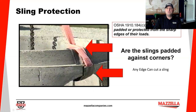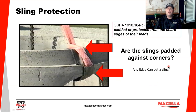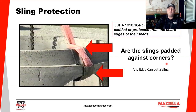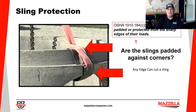OSHA 1910.184 states slings shall be padded or protected from the sharp edges of their loads. This piece of precast — to the hand — is probably not very sharp, but it can definitely cut a web sling. I would correct OSHA here and say any edge can cut a sling, whether it's a sharp load or an abrasive type where you get a sawing action. Think of a sharp load as a steak knife; an abrasive type as a butter knife that slowly gnaws away at the sling over time. All slings must be padded against corners — not just synthetics — because wire rope and chain can also suffer broken wires and metal loss around sharp or abrasive edges.